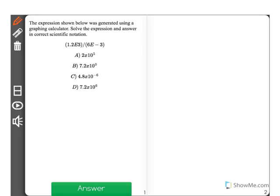The expression shown below was generated using a graphing calculator. Solve the expression and answer in correct scientific notation. 1.2e3 divided by 6e minus 3.